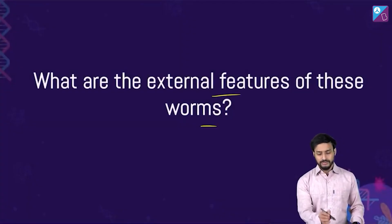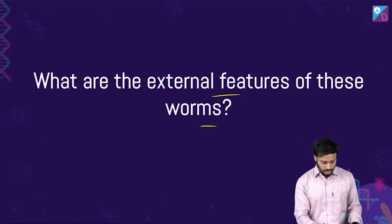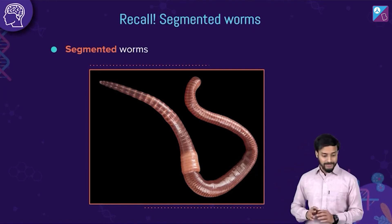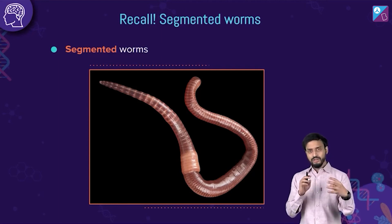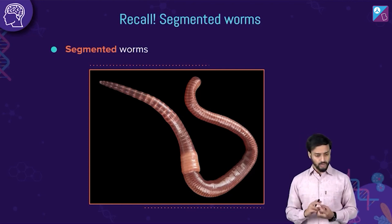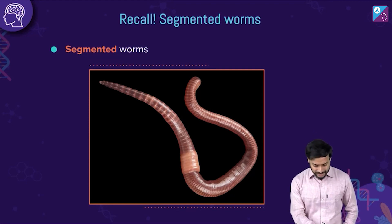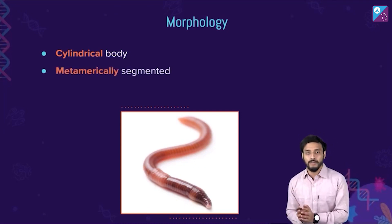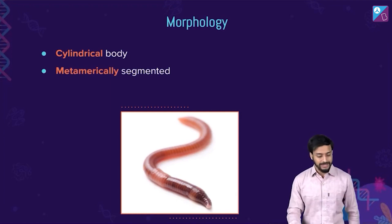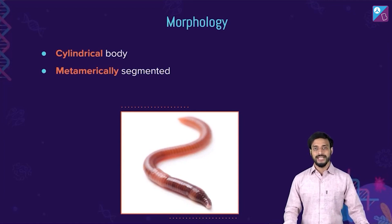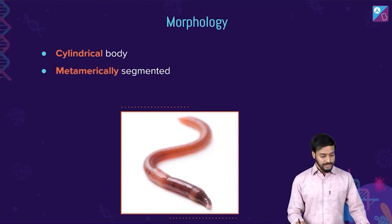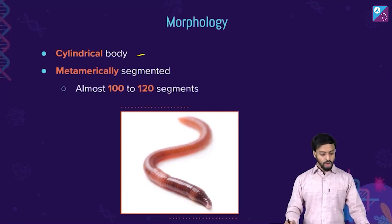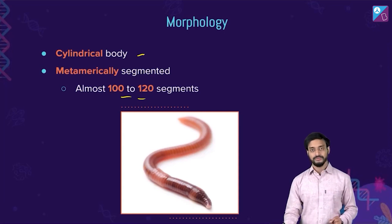What are the external morphological features of earthworms? They have a segmented body - very evident from the picture. The shape is cylindrical. To be more precise, they have metameric segmentation. Almost 100 to 120 segments are present in their body.